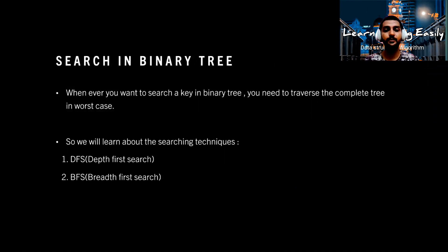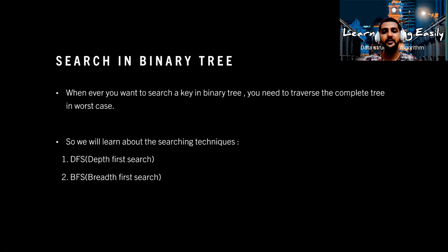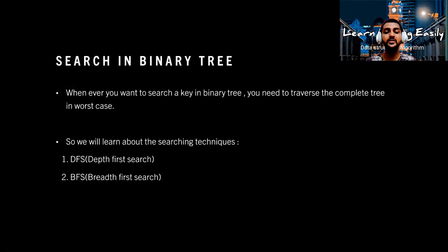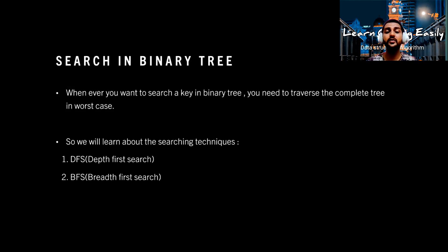Next, the search operation — this is one of the most important in the tree. For any question you want to solve in a tree, you need to traverse it. When searching for a key in a binary tree, in the worst case you need to traverse the complete tree, because the key could be at the very last node. There are two famous techniques for searching in a tree: depth first search (DFS) and breadth first search (BFS). As part of DFS, we have three different traversal techniques: pre-order, in-order, and post-order.